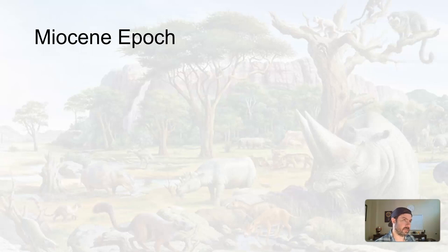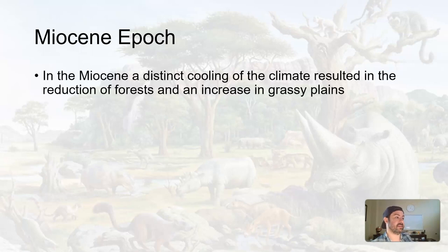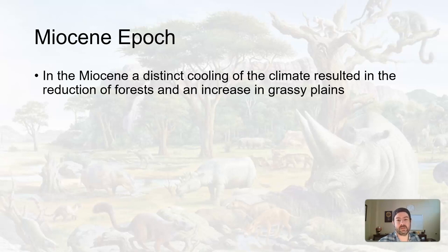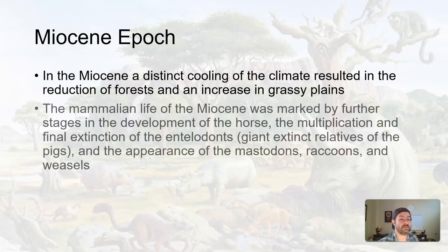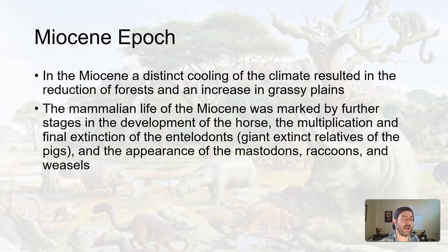The first epoch of the Neogene period of the Cenozoic era is the Miocene epoch. Distinct cooling of the climate resulted in reduction in forests, which made drier environments, which also means increasing grassy plains. Grassy plains are usually in more drier environments — not like desert dry, but a little bit drier.